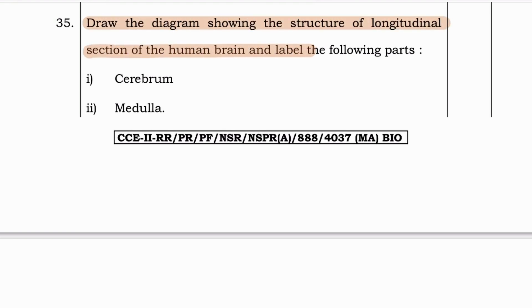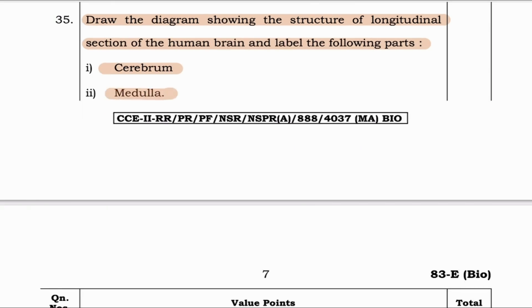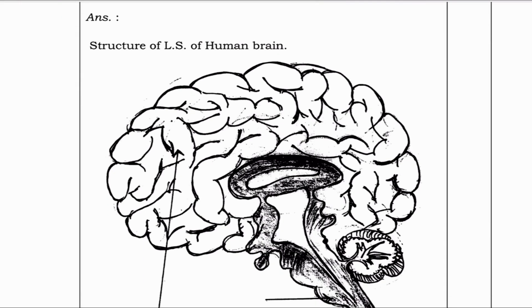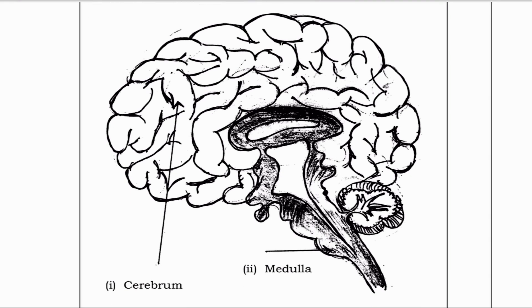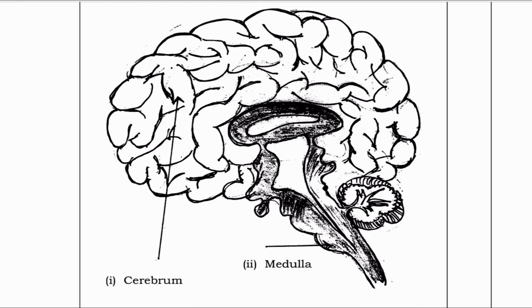Next question: Draw the diagram showing the longitudinal section of the human brain and label the cerebrum and medulla. Here is the diagram — this is the cerebrum and this is the medulla.